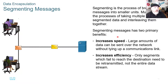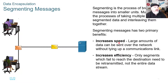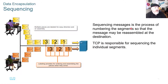Segmenting messages has two primary benefits. First, it increases speed — large amounts of data can be sent over the network without tying up the communications link. Second, it increases efficiency — only segments which fail to reach the destination need to be retransmitted, not the entire data stream. Sequencing is the process of numbering the segments so that the message can be reassembled at the destination properly. TCP is responsible for sequencing the individual segments.